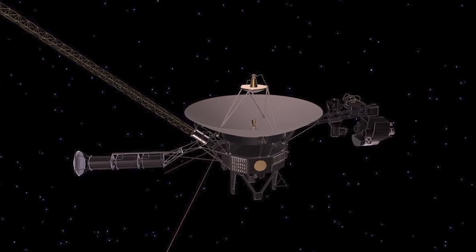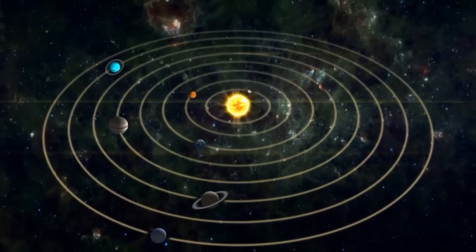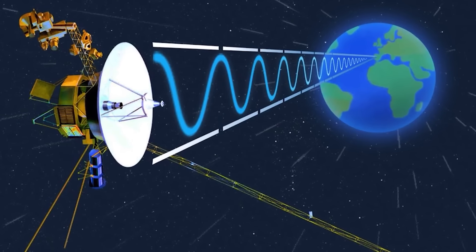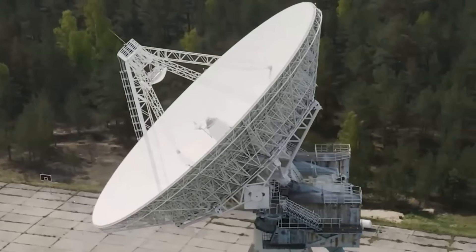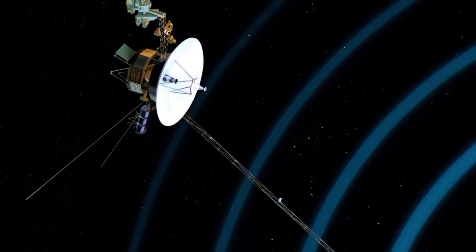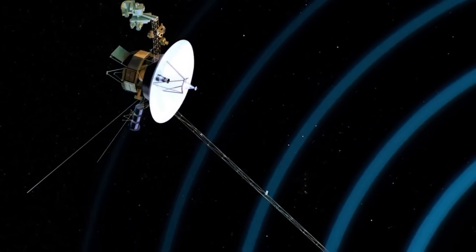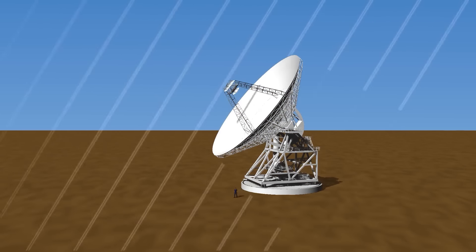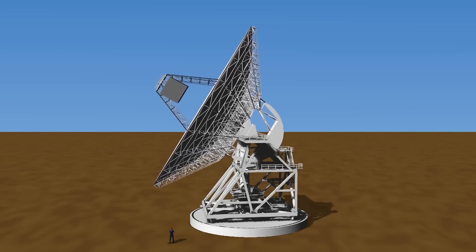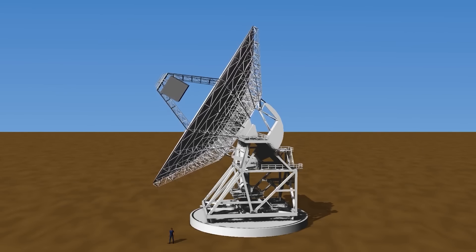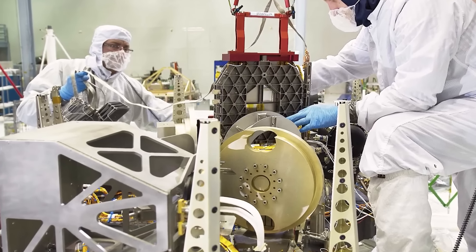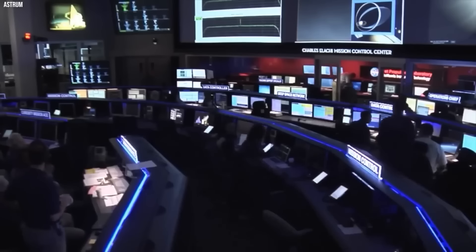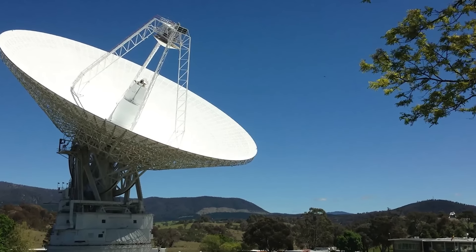Imagine the Voyager 1 spacecraft hurtling towards the outer reaches of our solar system, transmitting a faint signal back to Earth. The DSN's antennas, like cosmic listeners, captured this whisper and transformed it into valuable data for scientists to analyze. But the DSN's role wasn't limited to receiving signals. It also served as a communication channel for sending commands to the Voyager probes. As missions evolve, scientists and engineers often need to adjust plans or instruct spacecraft on new tasks. By transmitting these commands through the DSN, we could effectively guide the Voyagers on their incredible journeys.